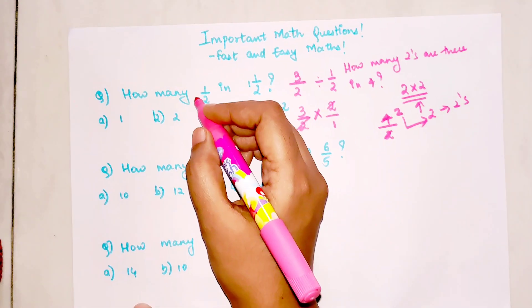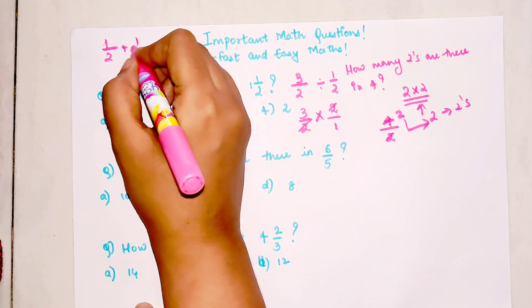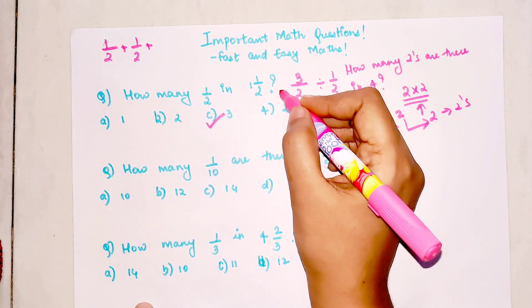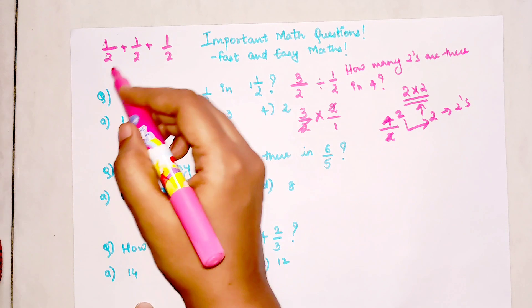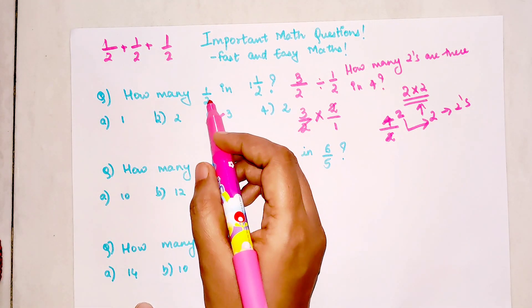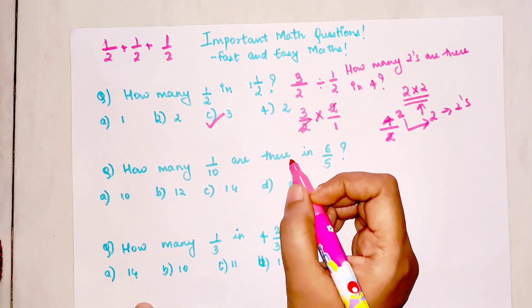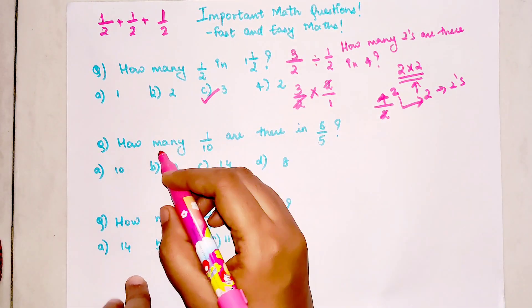If you want to check this, 1 and 1/2 is 1/2 plus 1/2 plus 1/2. How many are there? There are basically three halves in 1 and 1/2. Now, before going ahead, I would like to remind all of you: